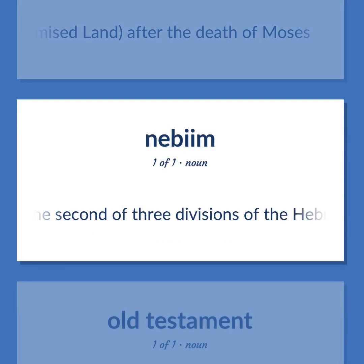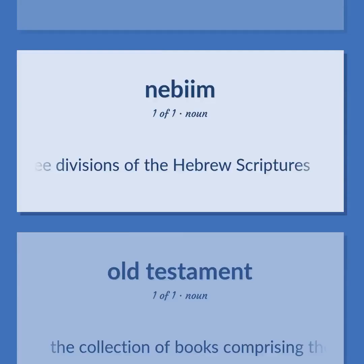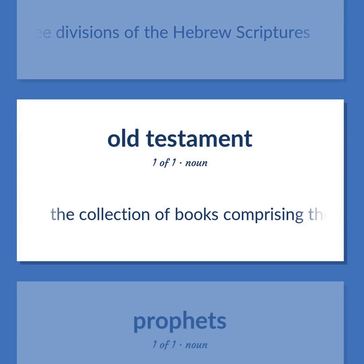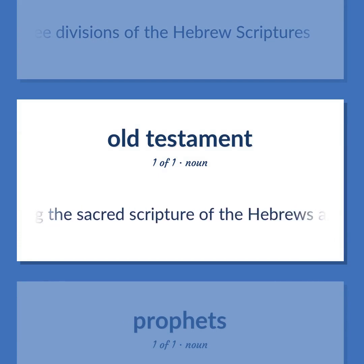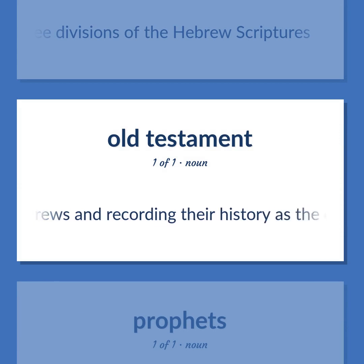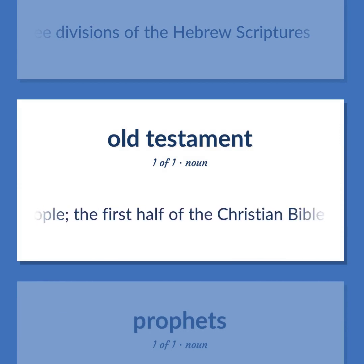The second of three divisions of the Hebrew Scriptures. The collection of books comprising the sacred scripture of the Hebrews and recording their history as the chosen people. The first half of the Christian Bible.